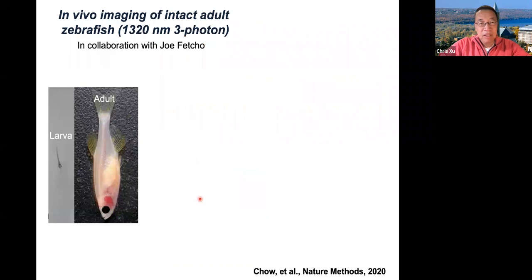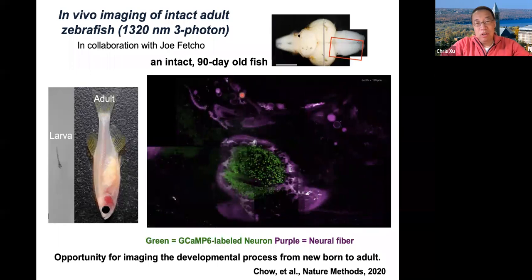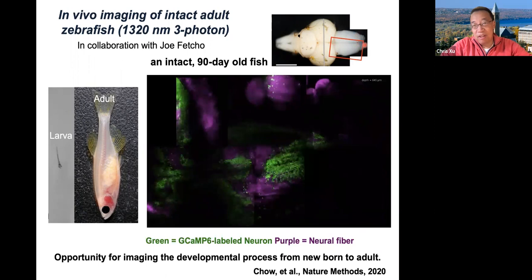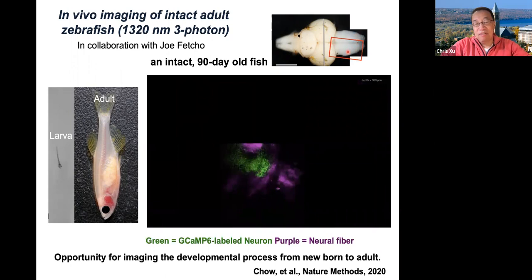We can also look at adult zebrafish, one of the favorite subjects for neuroscientists. Most people look at larval zebrafish — baby zebrafish — because when zebrafish are very young they're more or less transparent. But what about an adult fish? This approach images through the cartilage, through the scales, and reaches the brain underneath. Here is adult zebrafish imaging — three months old, already reaching sexual maturity. Green are the neurons and purple are the third harmonic generation signals. These are tiled together for the telencephalon area, imaging from the surface all the way to the bottom of the telencephalon through an intact fish. This provides an exciting opportunity for imaging the developmental process of zebrafish from newborn all the way to adults.